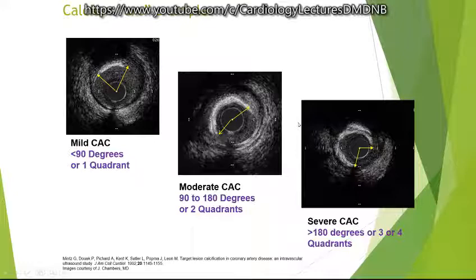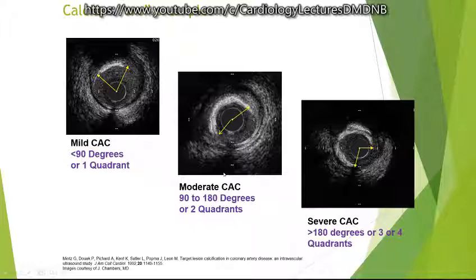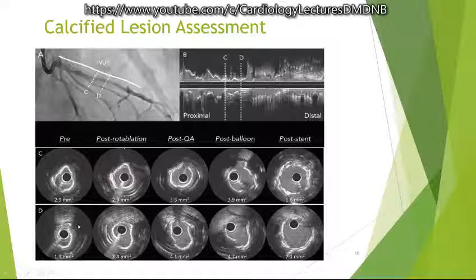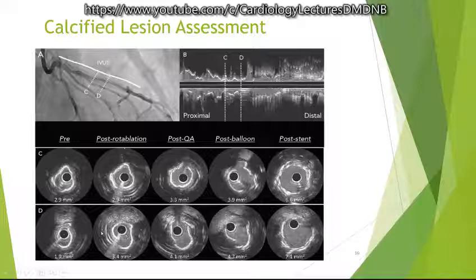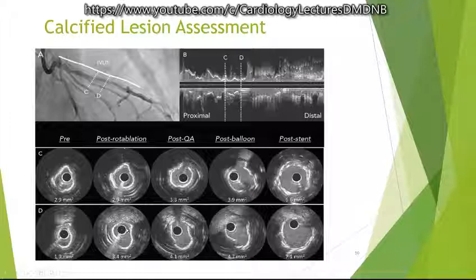Mild calcium can be managed with semi-compliant or non-compliant balloon at high pressure, but moderate to severe calcified lesions require rotablation, OPN, laser, or IVL. After rotablation, calcium is fissured and the area expands — for example from 1.9 mm² to 3.4 mm² — allowing the NC balloon to break the calcium further. Sometimes heavy calcium is not visible on fluoroscopy but becomes evident on IVUS when the balloon fails to pass, presenting as a calcium nodule with post-acoustic shadow.